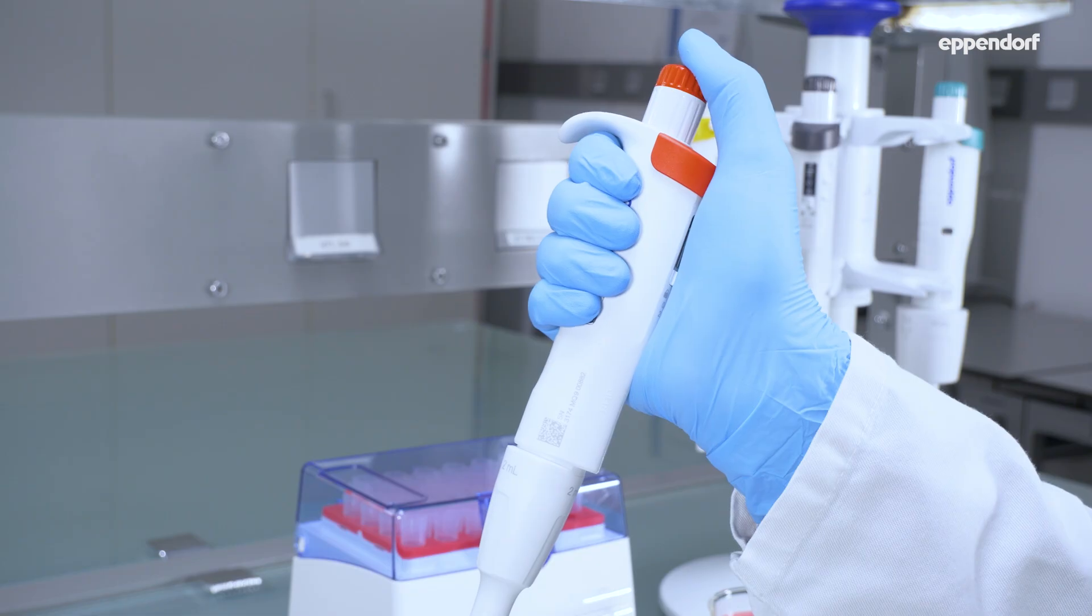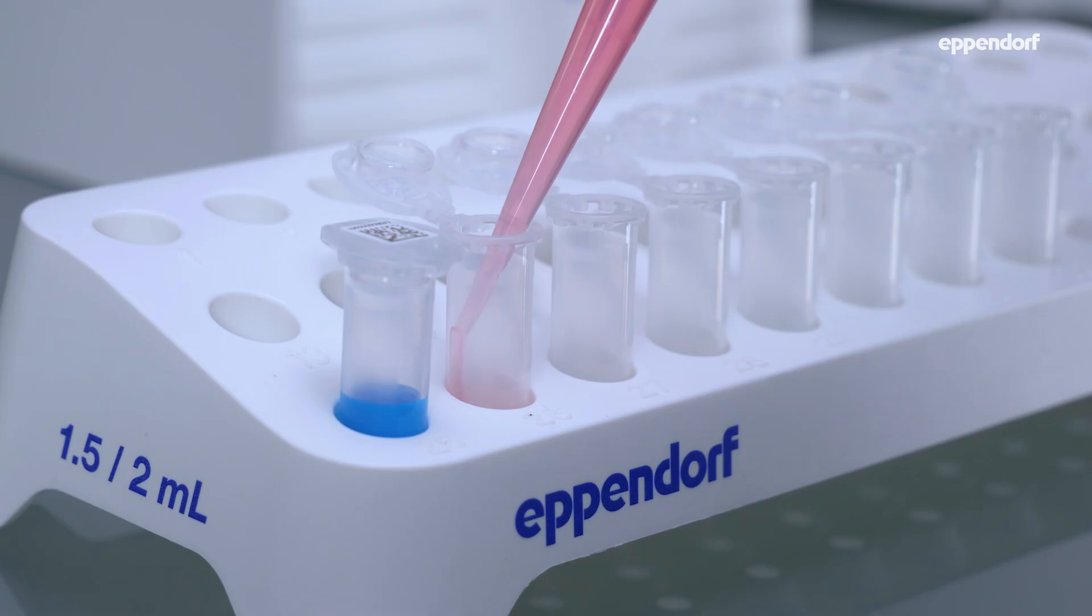Dispense the liquid into your target vessel by pushing the control button to the first stop. Don't blow out the tip, but pull it out with the excess volume still in the tip.